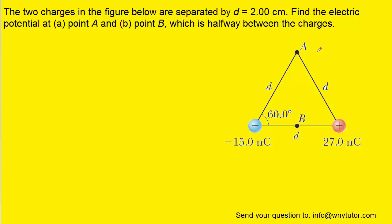In order to find the electric potential at points A and B, we need to look at the formula for the electric potential produced by point charges. So the electric potential is equal to the Coulomb's constant multiplied by the charge divided by the distance.